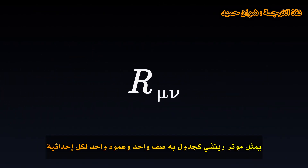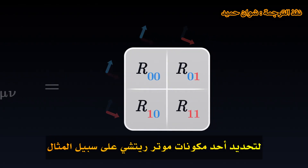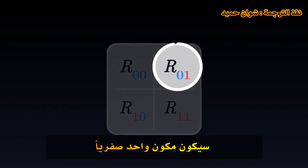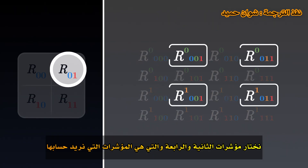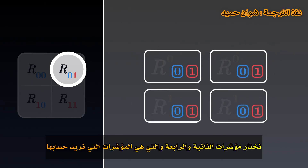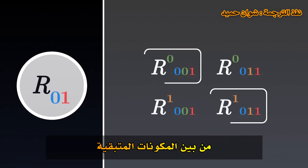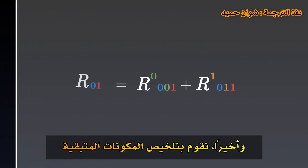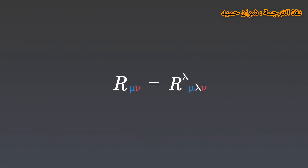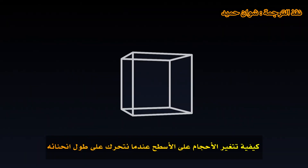The first of these two objects is called the Ricci tensor. The Ricci tensor is represented as a table with one row and one column for each coordinate. To determine a component of the Ricci tensor — for example its 0-1 component — we start from our curvature tensor. Among all its components, we select those whose 2nd and 4th indices are the indices we want to calculate, in this case 0 and 1. Among the remaining components, we keep those whose 1st and 3rd indices are the same. Finally, we sum the remaining components. Intuitively, the Ricci tensor measures how volumes change on the surface when we move along its curvature.